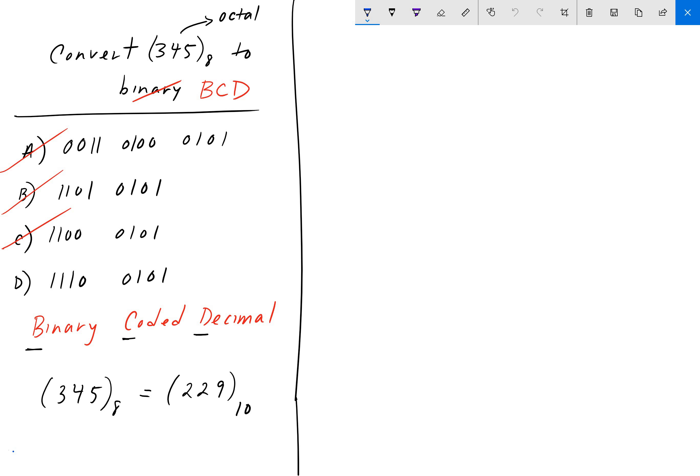BCD is binary coded decimal. Here's a hint on the bottom: I gave you what we solved in the last video—345 octal equals 229 decimal.